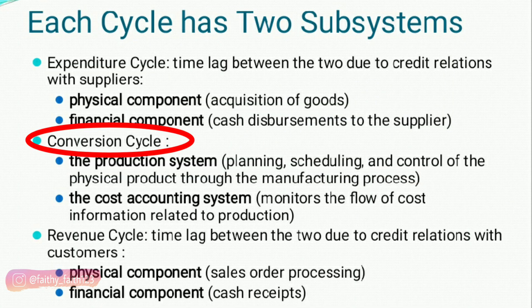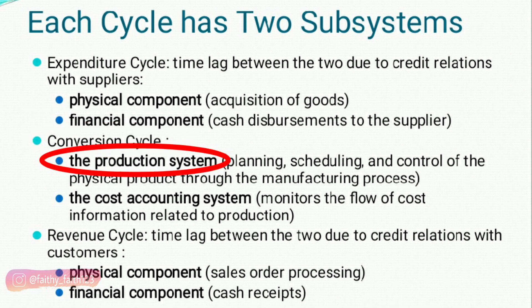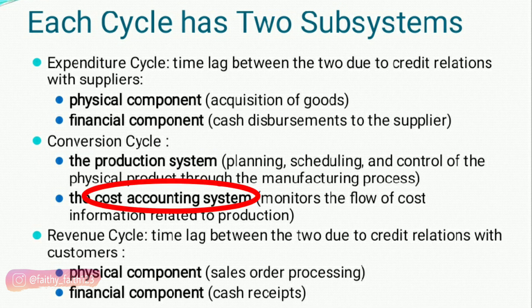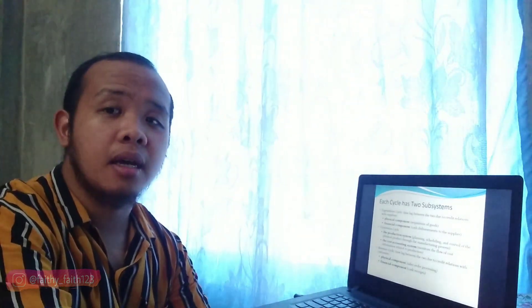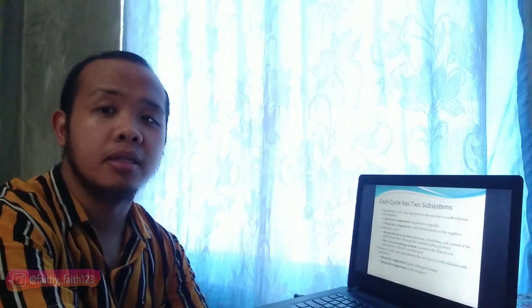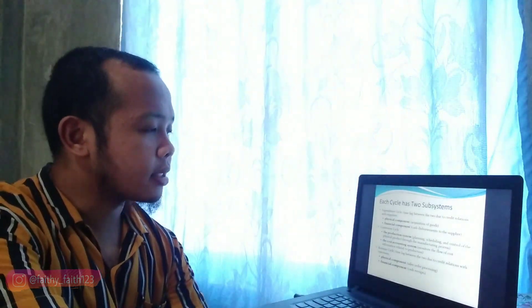The conversion cycle has two subsystems: the production system and the cost accounting system. Production covers planning, scheduling, and control of the physical product through the manufacturing process. While cost accounting monitors the flow of cost information related to production — because at each stage of production, there is a cost attributed to it.